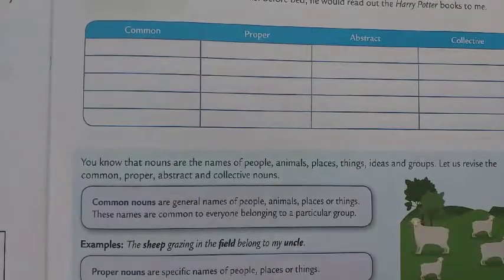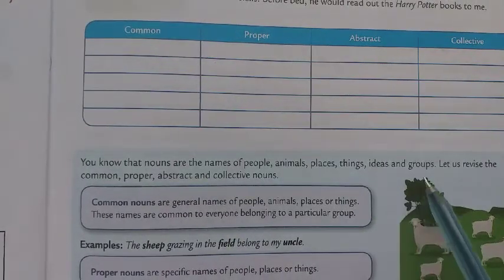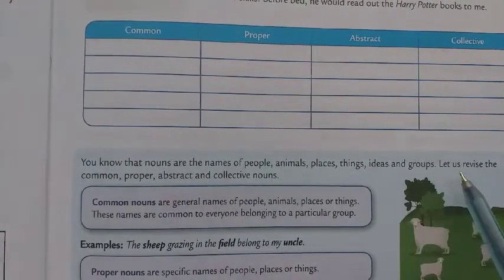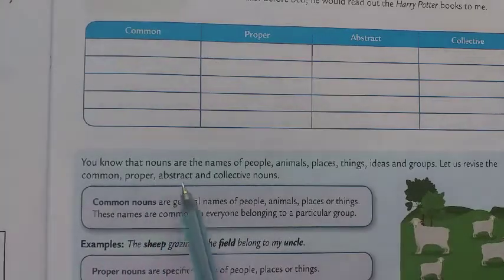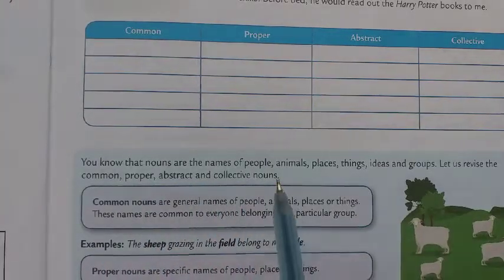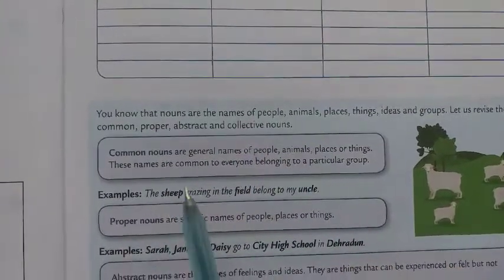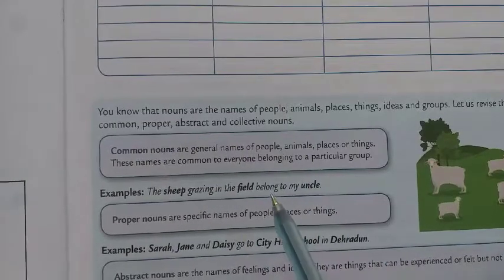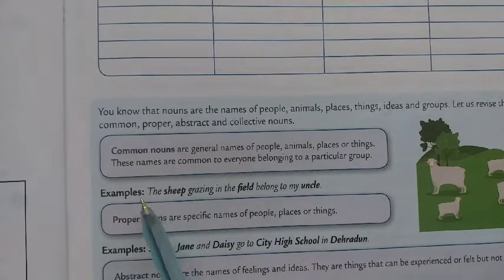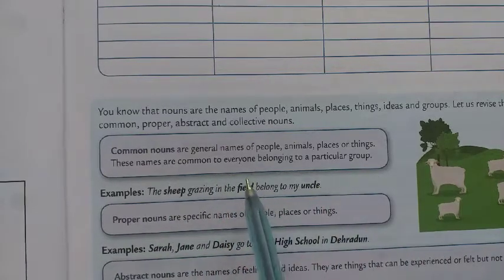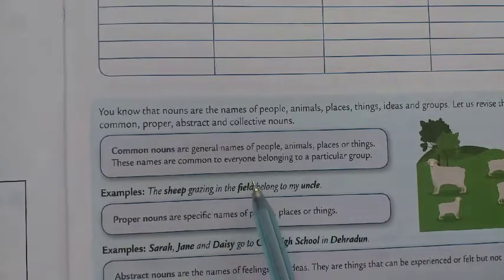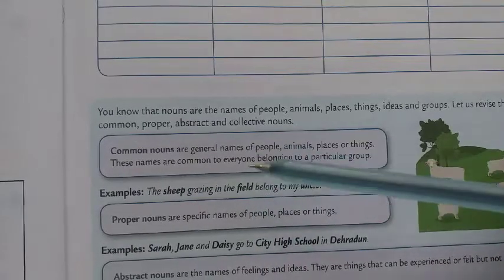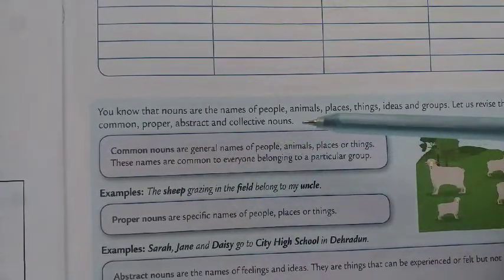Let us revise the common, proper, abstract, and collective nouns. Common nouns are general names of people, animals, places, or things. These names are common to everyone belonging to a particular group. For example, 'teacher' is a common noun.